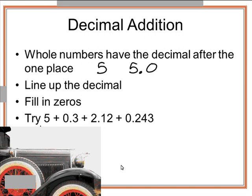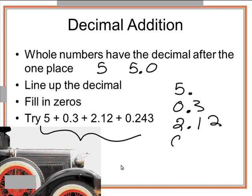So let's try this problem. The decimal is after the 5. The decimal in the next number is between the 0 and the 3. The decimal here is 2.12, then 0.243.